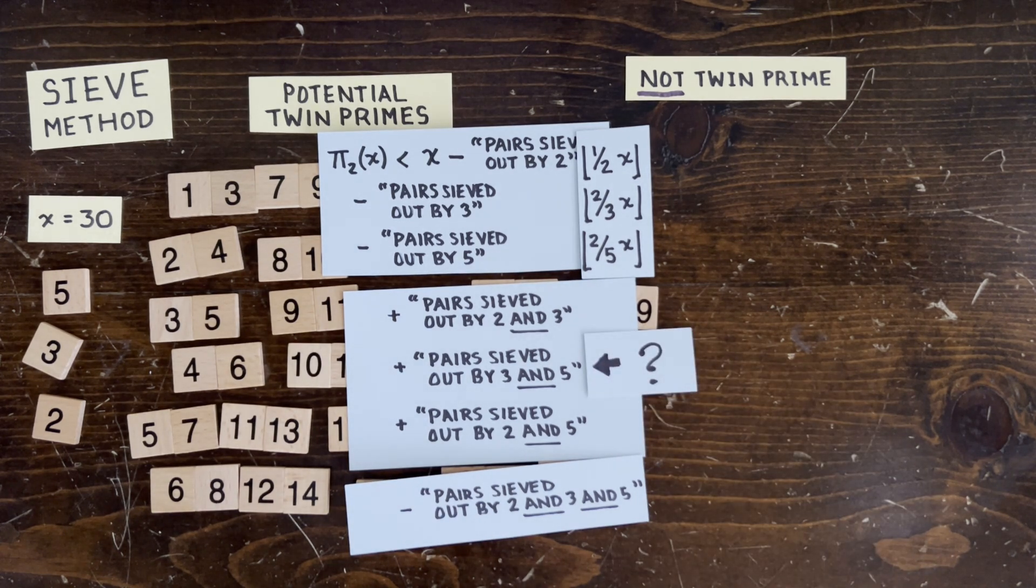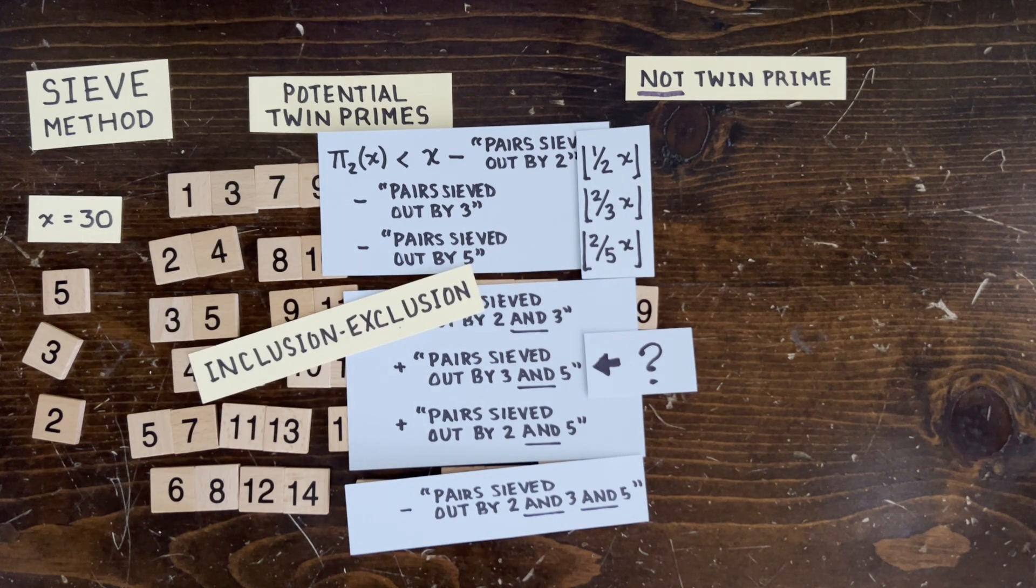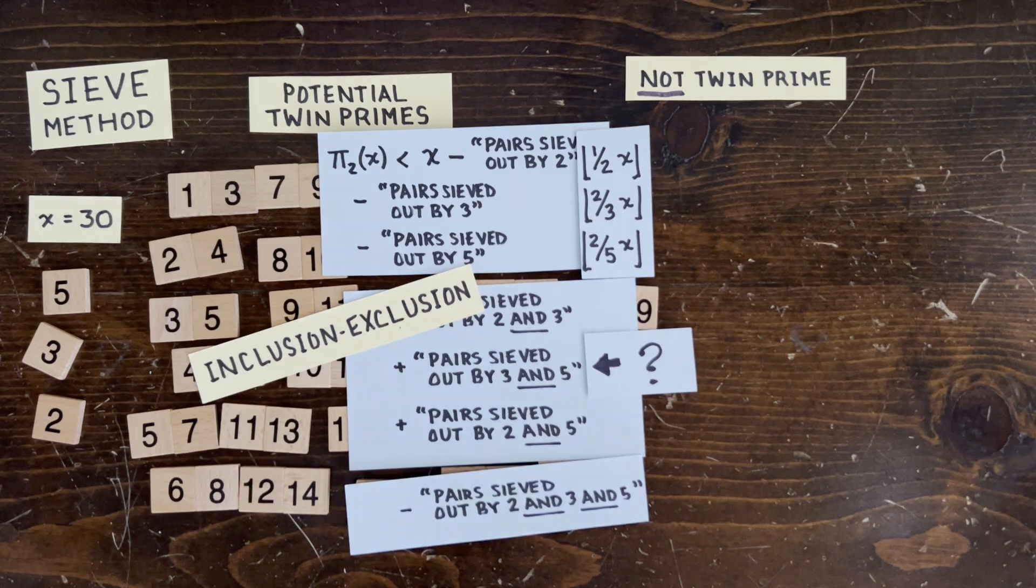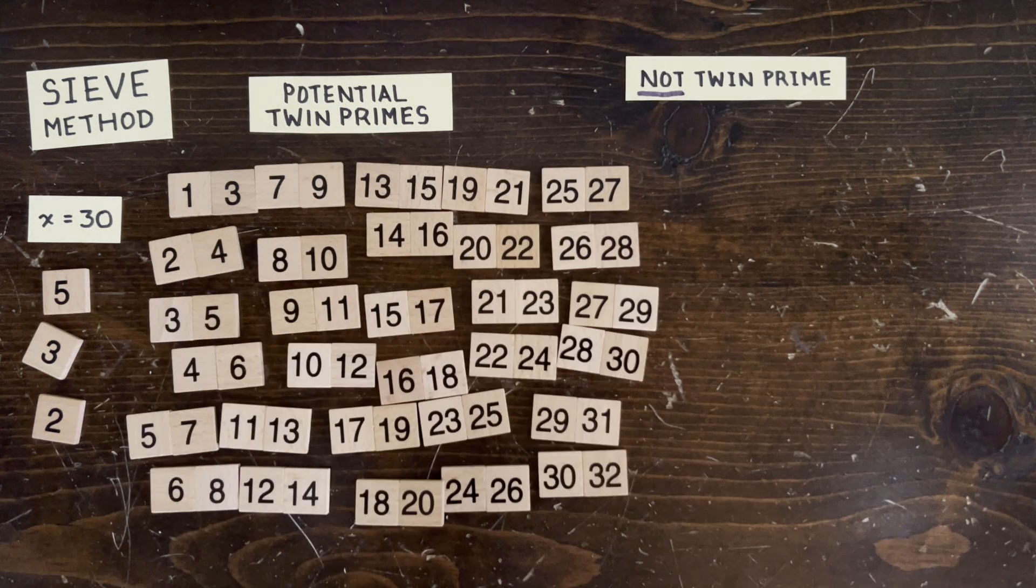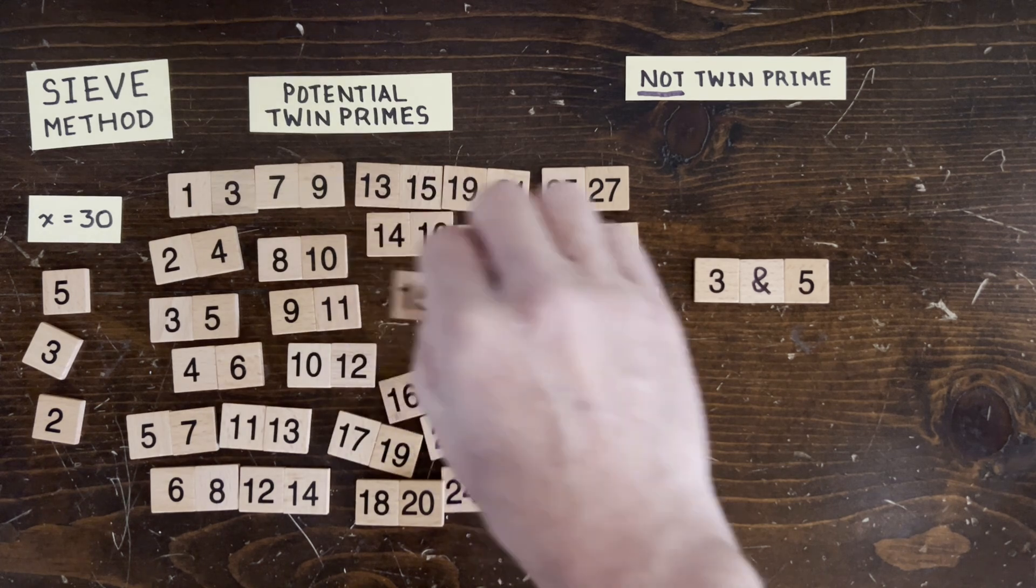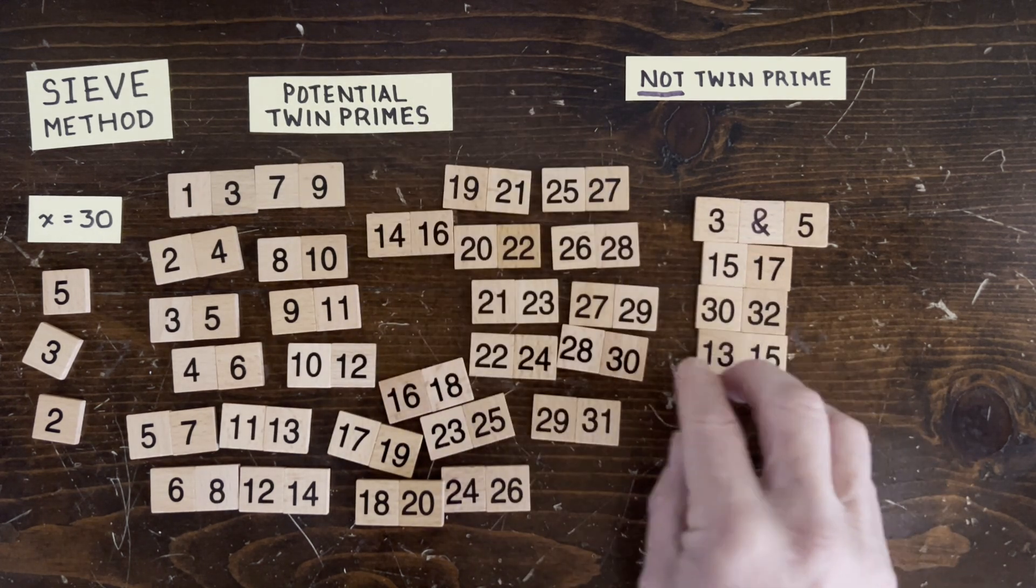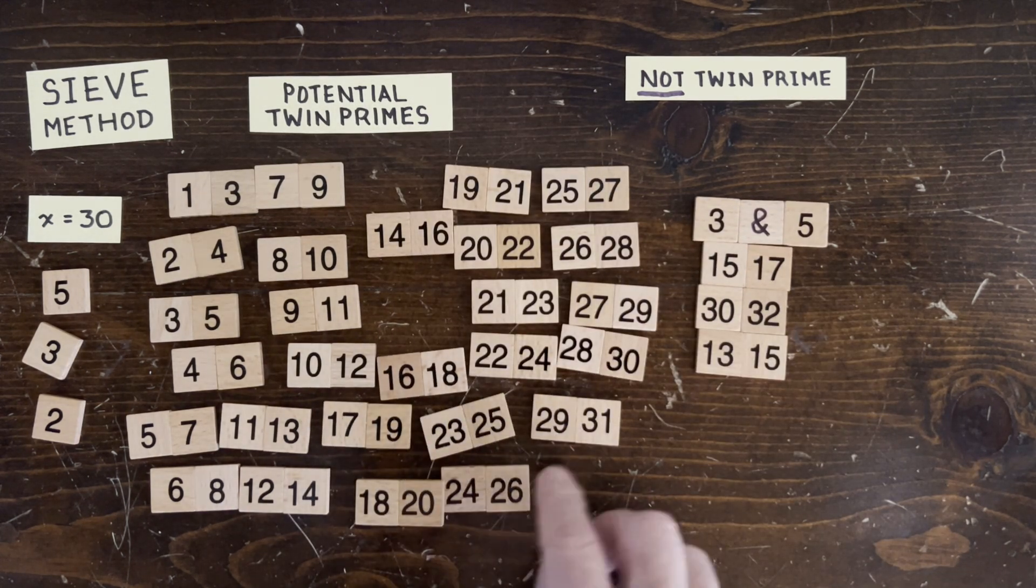So we need to take a closer look, for example, about sieving with 3 and 5. Okay, first of all, this is a huge amount of sieving. Even with just 3 and 5, hardly anything survives.